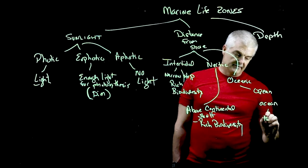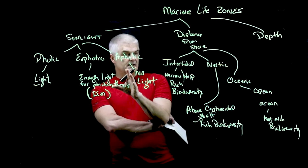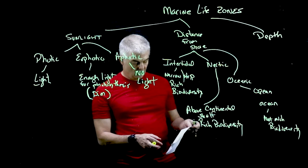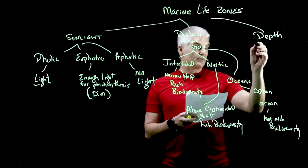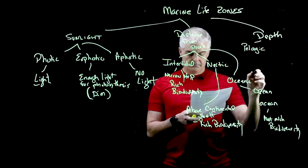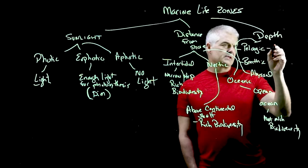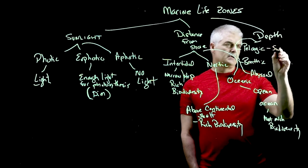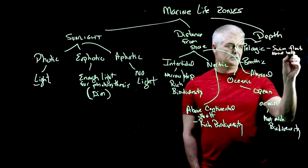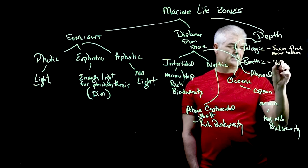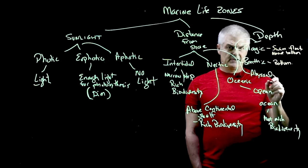We can also look at depth, and there are three depth regions. The pelagic zone covers creatures that swim or float above the bottom. The benthic zone covers the bottom feeders. And the abyssal zone is the deep, deep ocean — you find it in places like the trenches, like the abyss — and very few creatures live there.